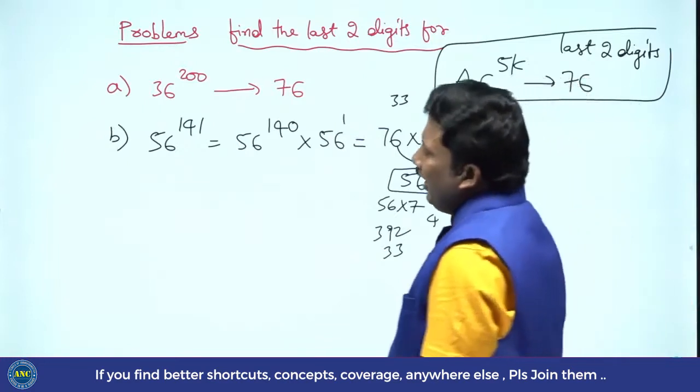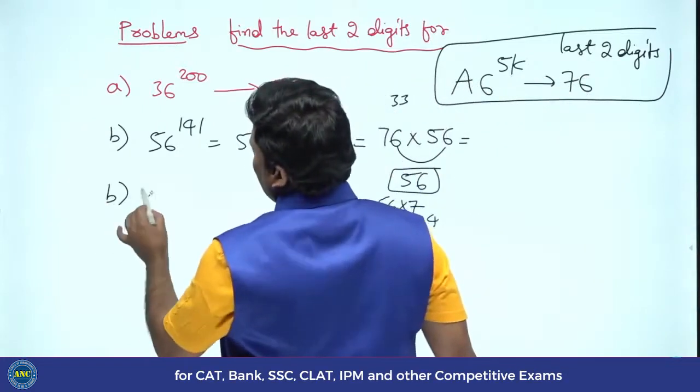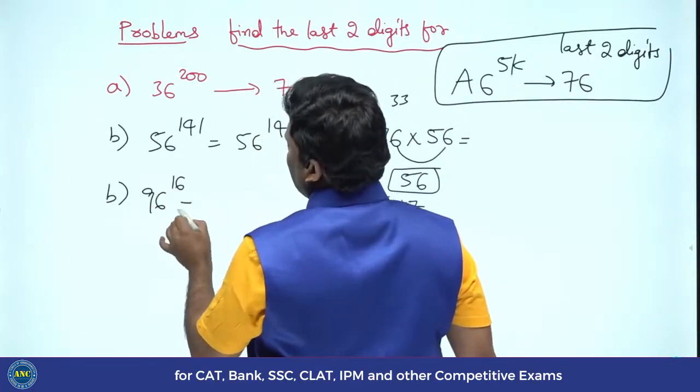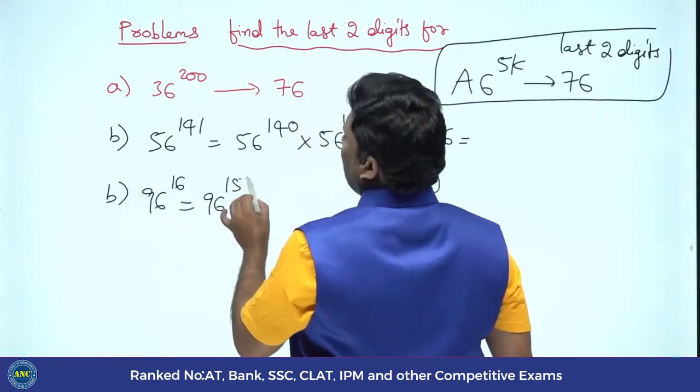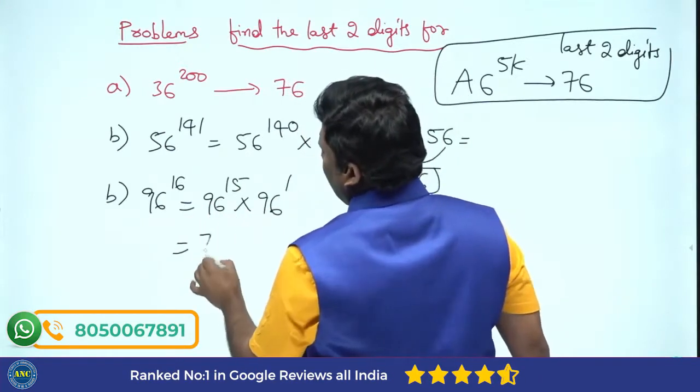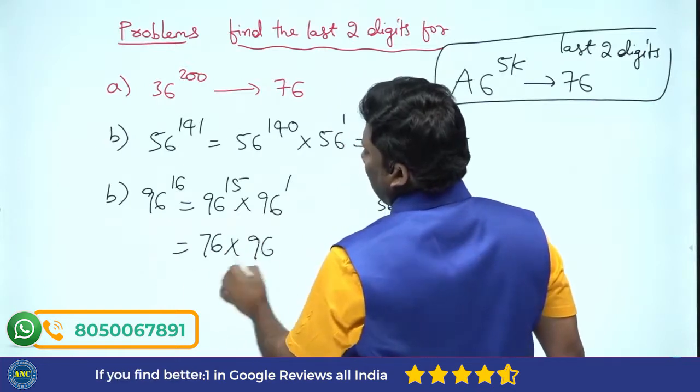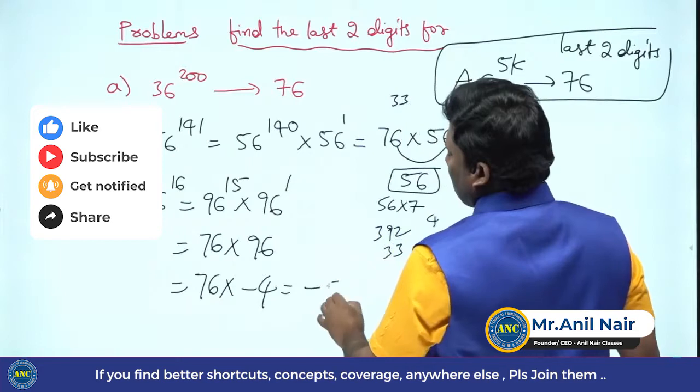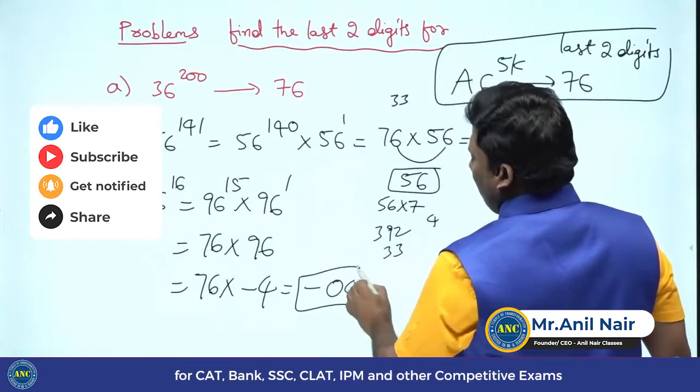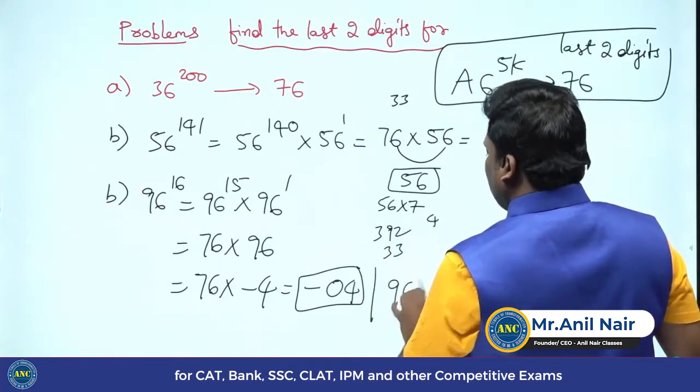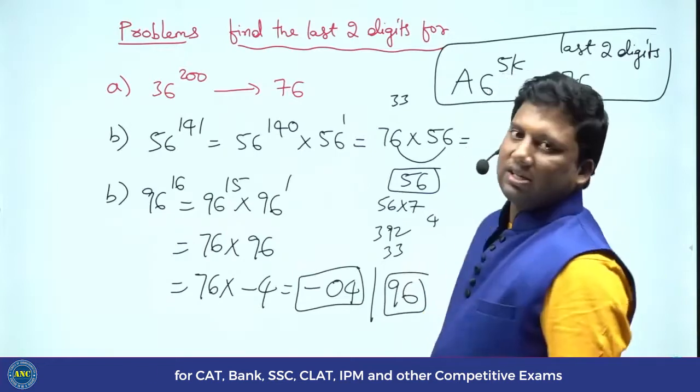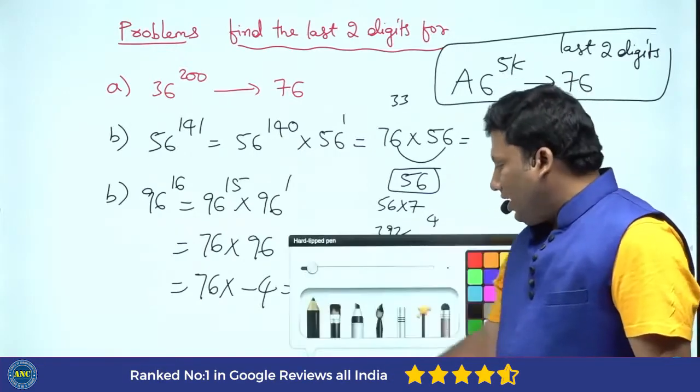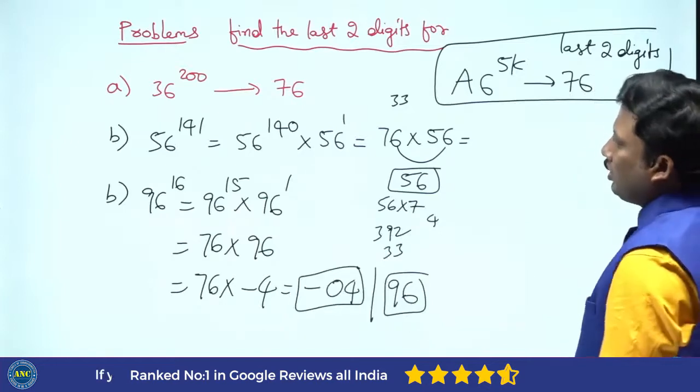Very easy question. 96 power 16. It is 96 power 15 into 96. It is 76 into 96. 96 divided by 100 - minus 4. Negative reminder minus 04. Positive reminder, it is 96. Extremely easy question.